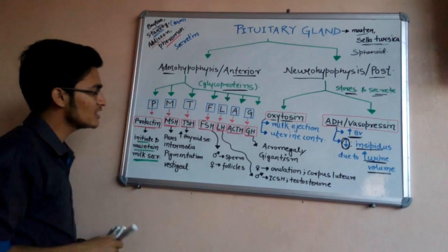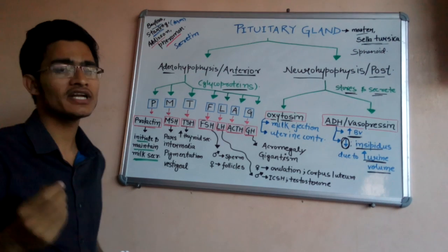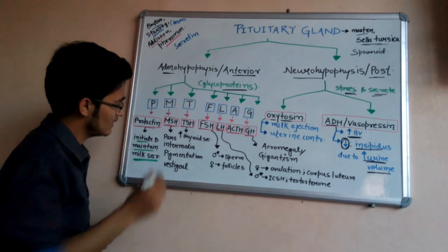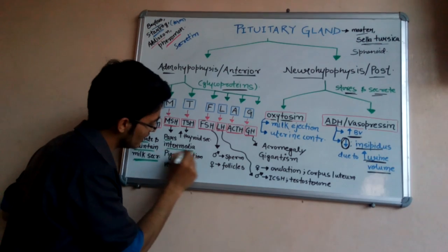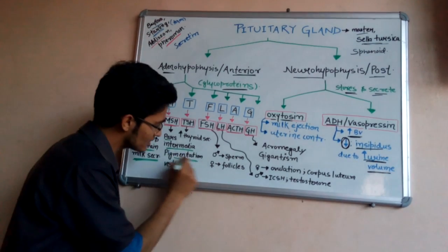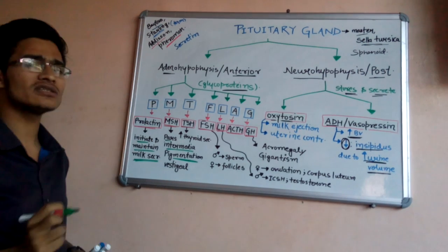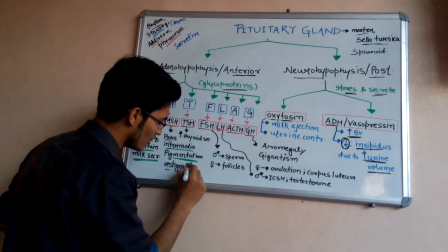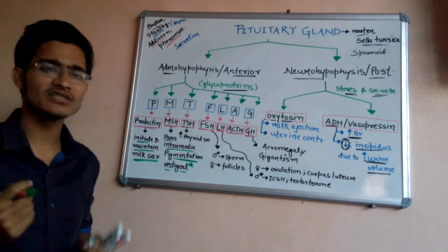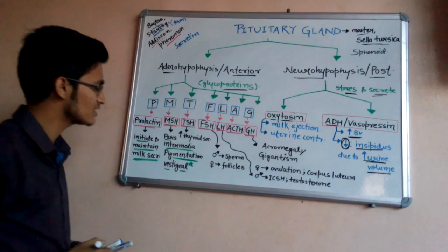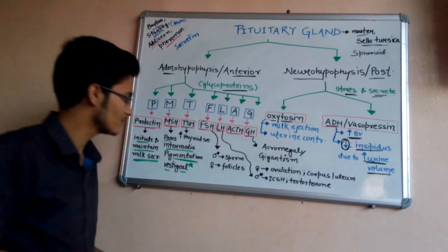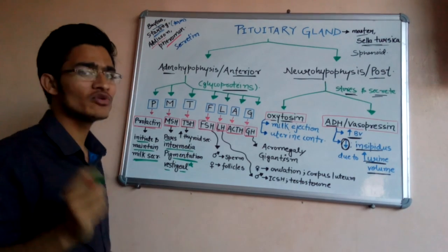M stands for MSH, the melanocyte-stimulating hormone. It is secreted by the pars intermedia and is responsible for pigmentation in our skin. However, in humans, MSH is a vestigial hormone — this is a very important exam point, as you may be asked which hormone is vestigial in humans.